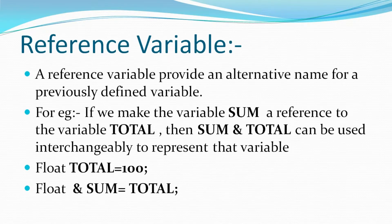Now our next topic is reference variables. In simple terms, a reference variable is just an alternate name for a previously defined variable. For example, suppose my name is Akash and my alternate name is Ankit — Ankit is a reference name for Akash. So a reference variable provides an alternate name for a previously defined variable. If we make sum a reference to the variable total, then sum and total can both be used to represent that variable.